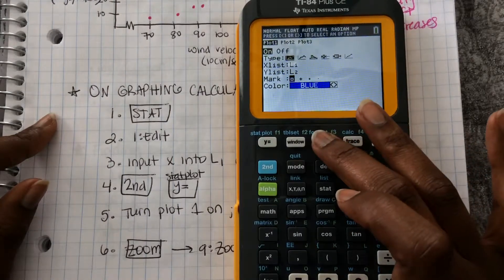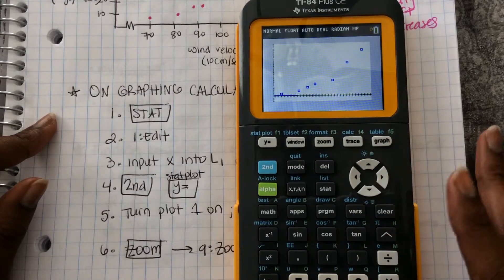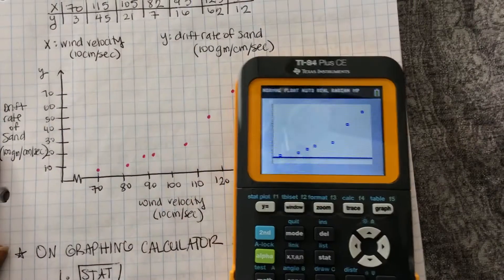So now I'm going to click ZOOM and go down to ZOOM STAT. And look, there's my scatter plot.